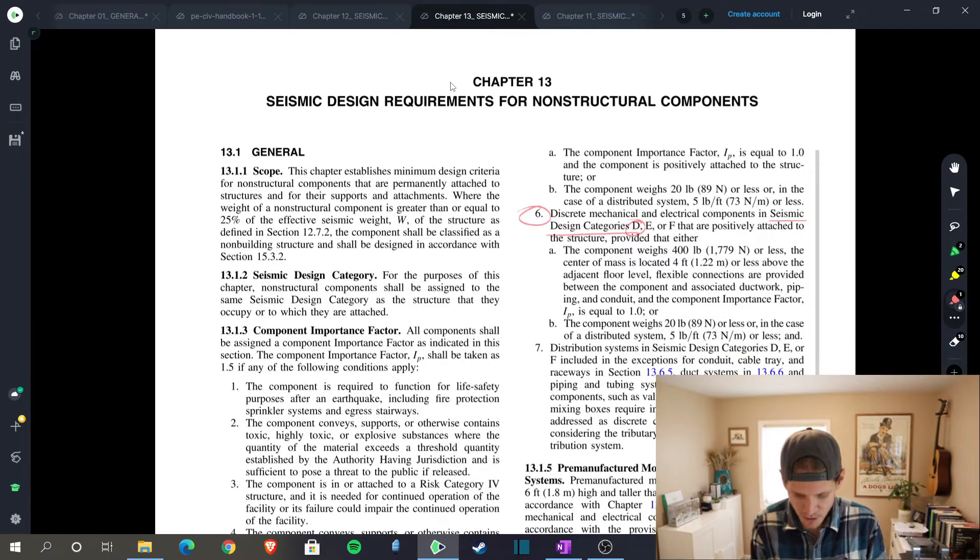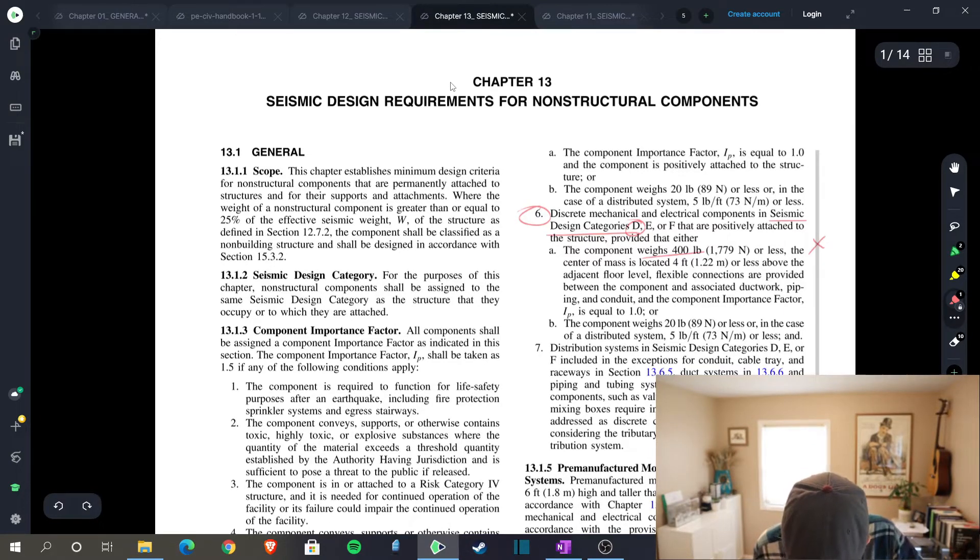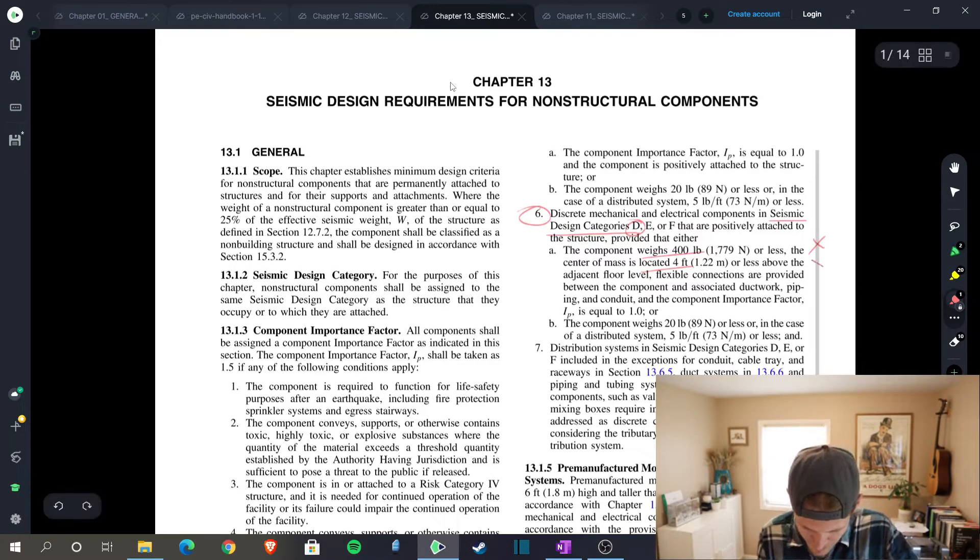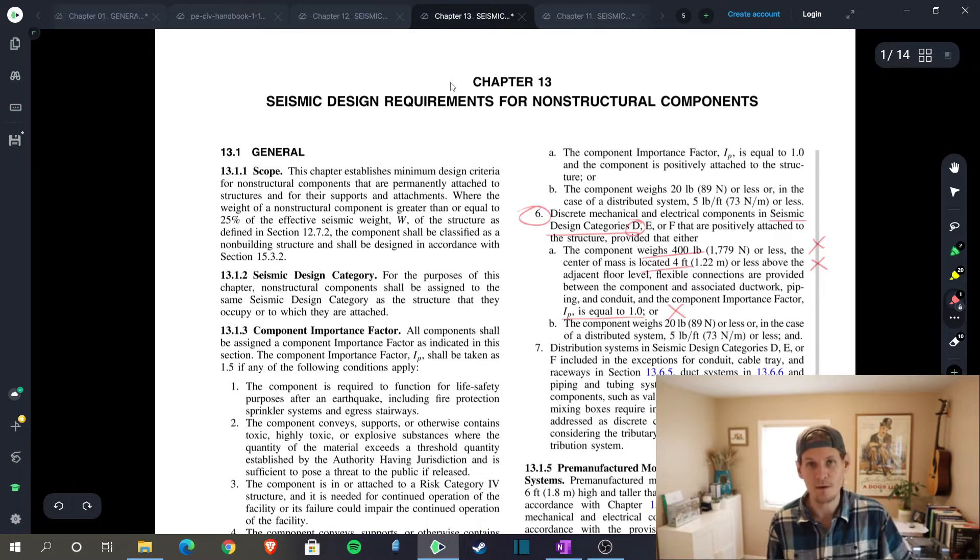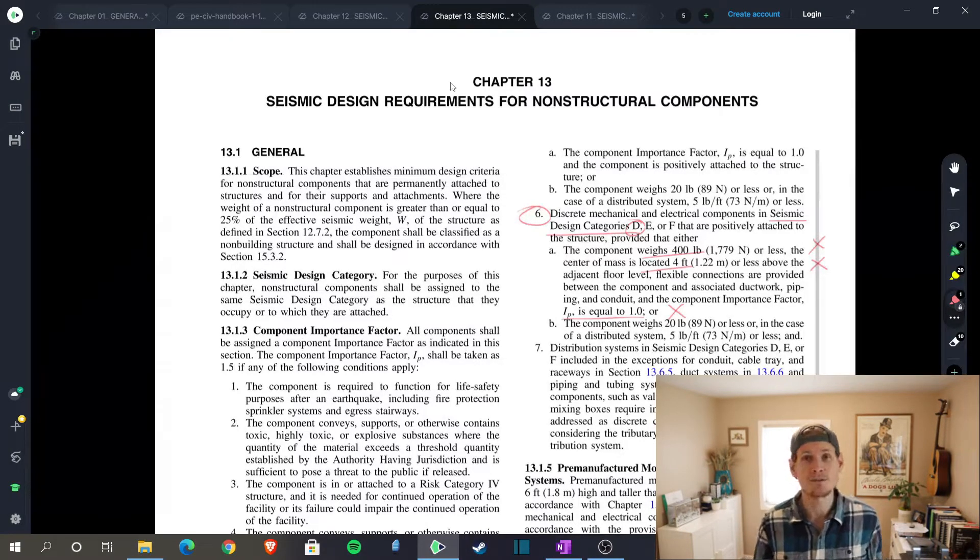What this passage is saying is that you are exempt if you're in seismic design category D and you're positively attached to the structure, so you do have some sort of anchorage provided, that either the component weighs 400 pounds or less—well, our unit is a thousand pounds, so we don't work out there. The center of mass is located four feet or less above the adjacent floor level—we're five feet, so that doesn't work out. And lastly, the importance factor is equal to 1.0—we also don't work out, we have 1.5. So strike three, we need to design this anchorage, but that's okay, that's why we're here today, right.